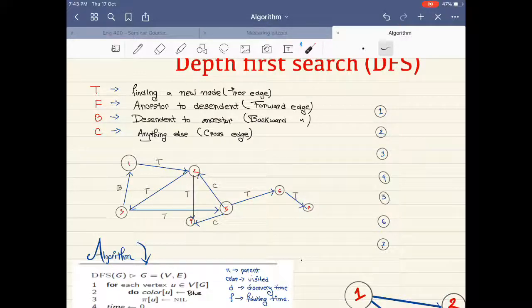The second one is the ancestor to descendant edge, so you're going from, let's say, one is the parent of three, so you're going from one to three - that would be a forward edge. B is the backward edge, so if you're going from the child to the parent, that would be a backward edge.